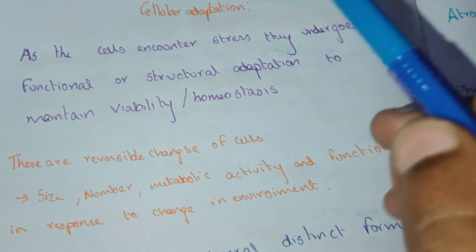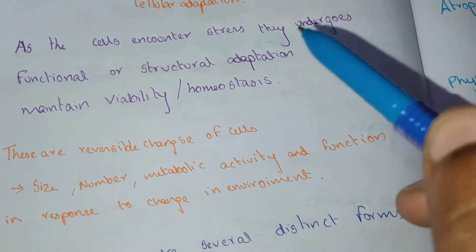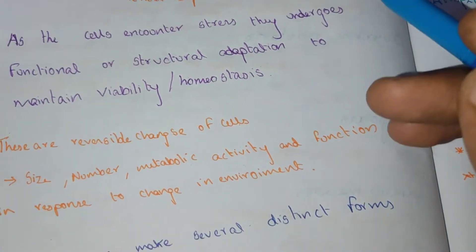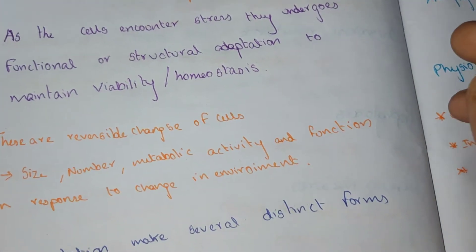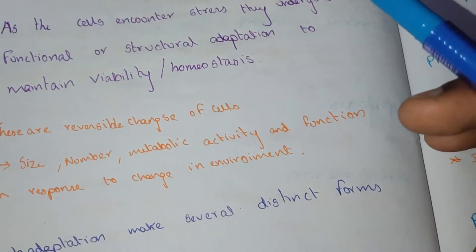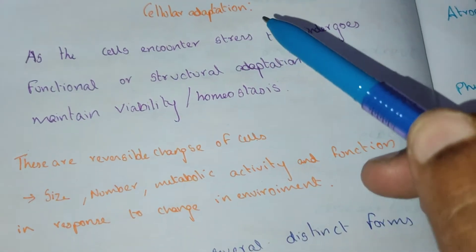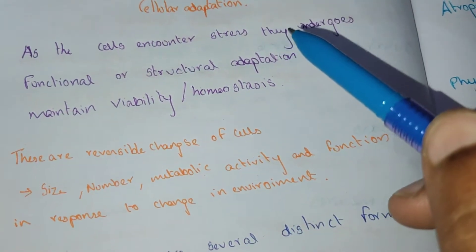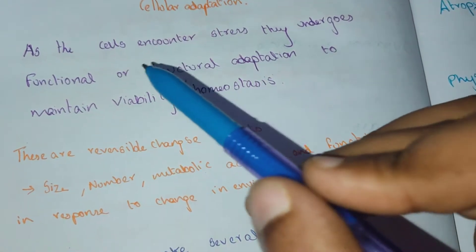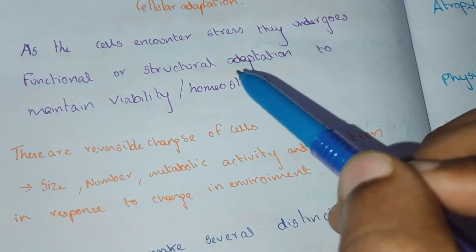If we have a pressure or stress and the cell is not able to handle it, it results in cell death — that is necrosis. If the cell is able to adapt, that is cellular adaptation — both functional and structural adaptation.